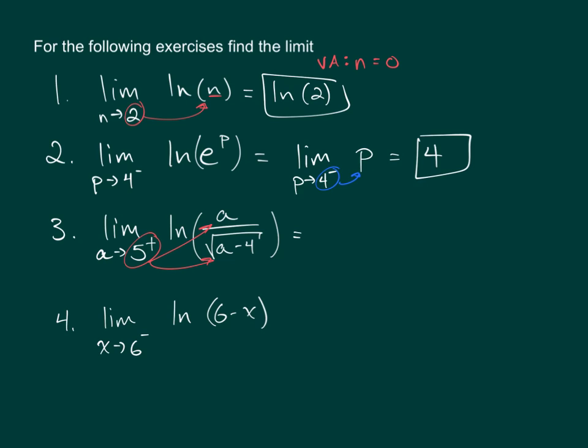That leaves you with the natural log of 5 over, in the denominator, 5 minus 4 equals 1, and the square root of 1 is 1, which simplifies to the natural log of 5.